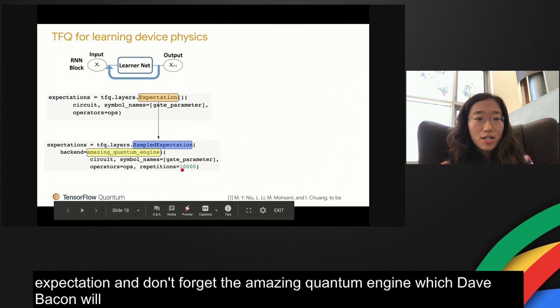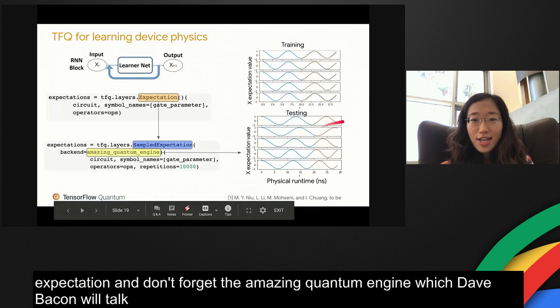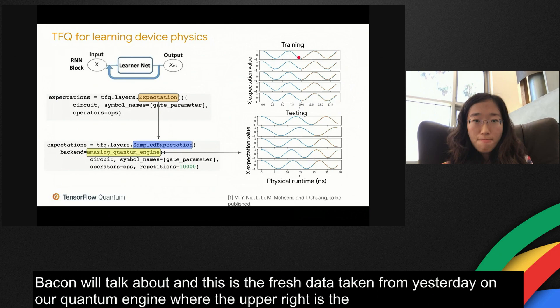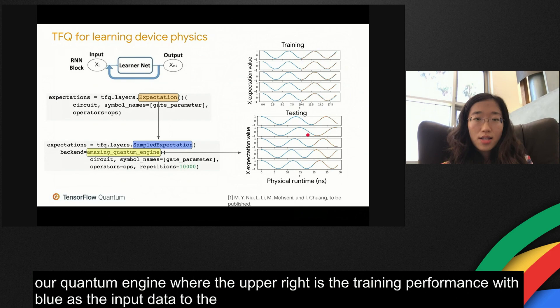And bam, this is the fresh data taken from yesterday on our quantum engine, where the upper right is the training performance with blue part as the input data to the LSTM and the orange part as the prediction. And the lower part of the figure is the testing result.